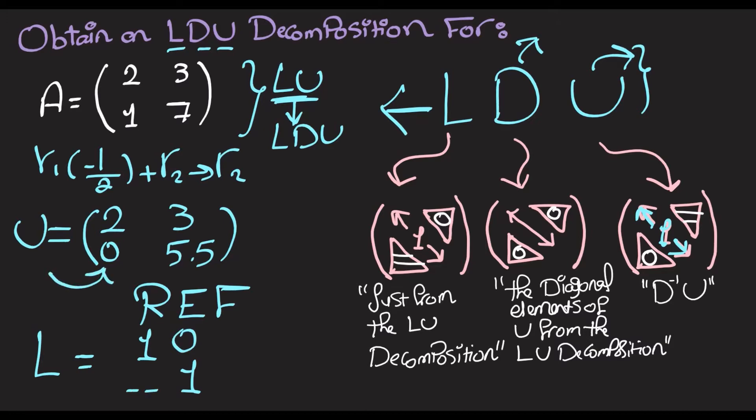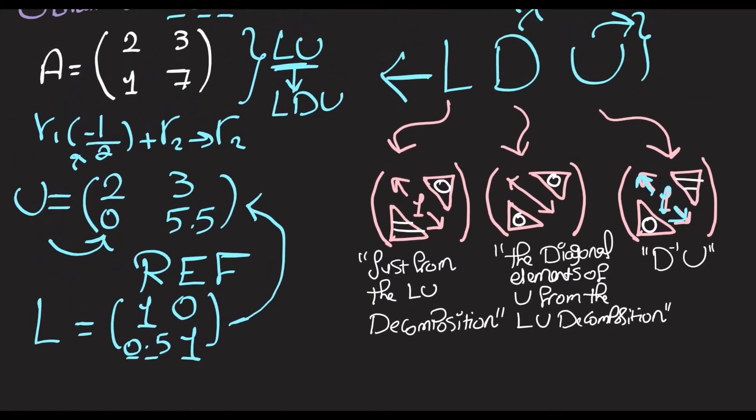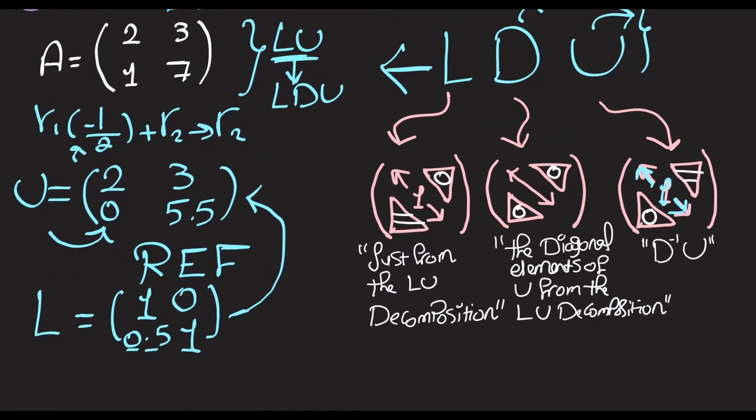So it's going to be negative negative half, which is just half. Now at this point if we multiply this L by this U, we expect to get this matrix A back. But what we're looking to do is try to describe A in terms of L...